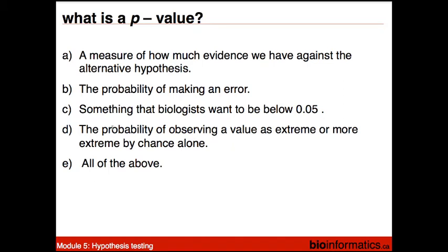So what actually is a p-value? We can say a p-value is: a measure of how much evidence we have against the null hypothesis; or the probability of making an error; or something that biologists want to be below 0.05; or the probability of observing a value as extreme or more extreme by chance alone. It gives your graph a star quality — you can put a star on that bar, and if it's less than 0.01, you're allowed to put two stars, and then things become totally convincing.